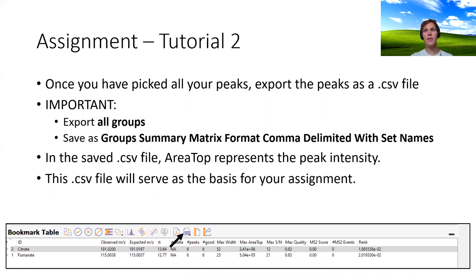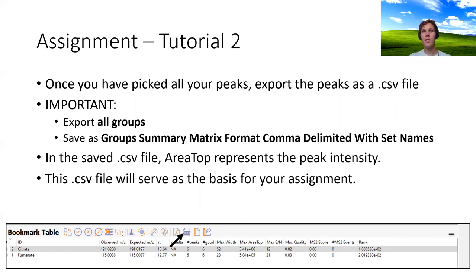Once you've picked all your peaks, export them as a CSV file by clicking the export button on the bookmarks table. Importantly, export all groups and save as a group summary matrix format, comma delimited with set names. If you save it in any other format, it won't come up properly. In the saved CSV file, Area Top will represent your peak intensity, and this CSV file will serve as the basis for your assignment.